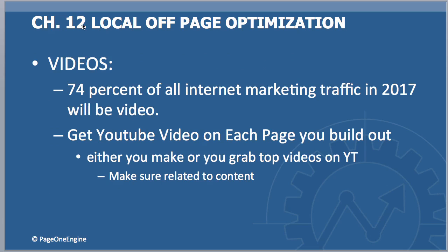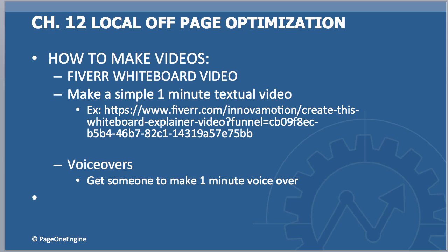Here's a crazy fact: 74% of all internet marketing traffic in 2017 will be video, so people are going to start getting used to video on websites and expecting it as well. What you want to do is get a YouTube video on each page that you build out — either you make the video yourself or you go grab one from one of the top positions on YouTube. Just go to the YouTube search section, enter a keyword, and pick from one of the top two or three results.